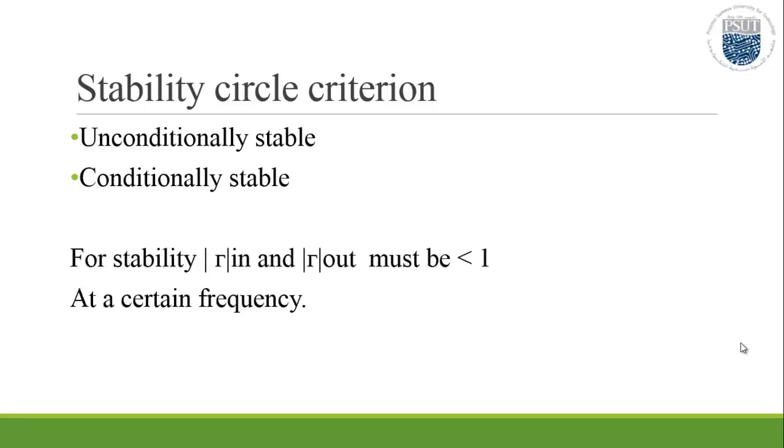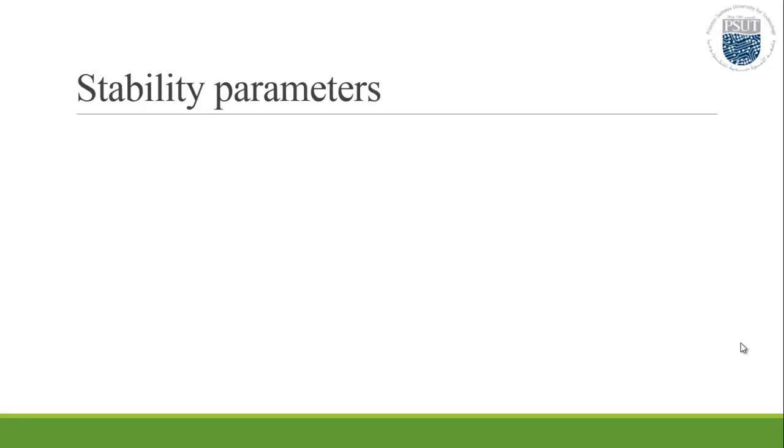Gamma in and gamma out amplitude must be less than 1. The main way of determining any device stability is by calculating two factors, delta and k parameter. The k parameter represents the Rollett stability factor, which can be computed by the S parameters.